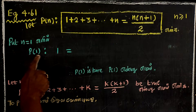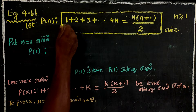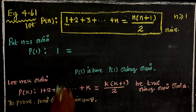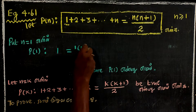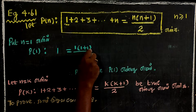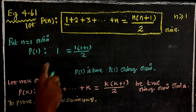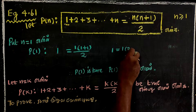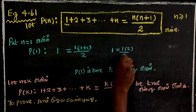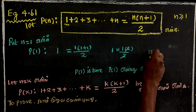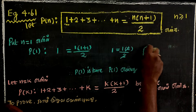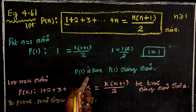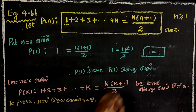P is equal to 1. If n equals 1, we can put 1 into the formula: 1 equals 1 times (1+1)/2, which gives 1 equals 1 times 2 divided by 2. After cancellation, 1 equals 1. Therefore, P(1) is true.